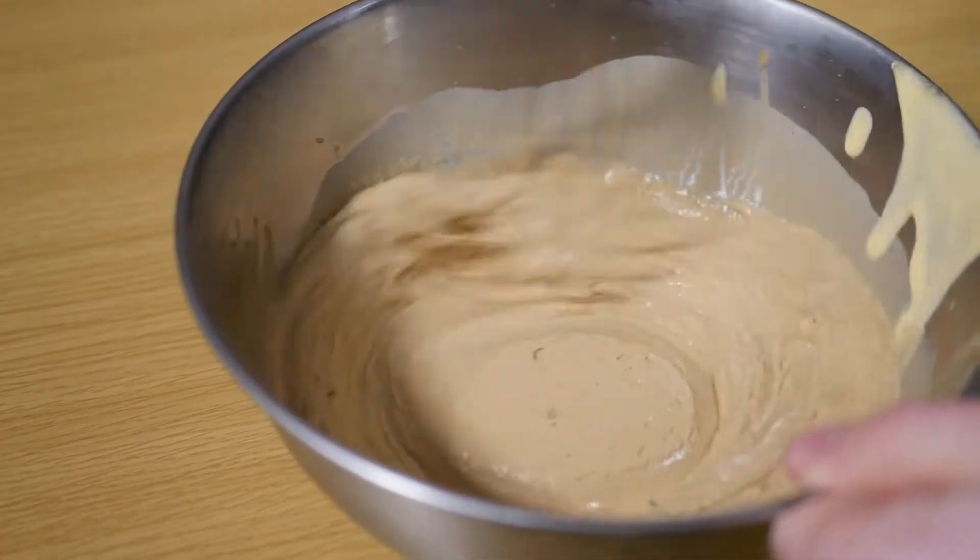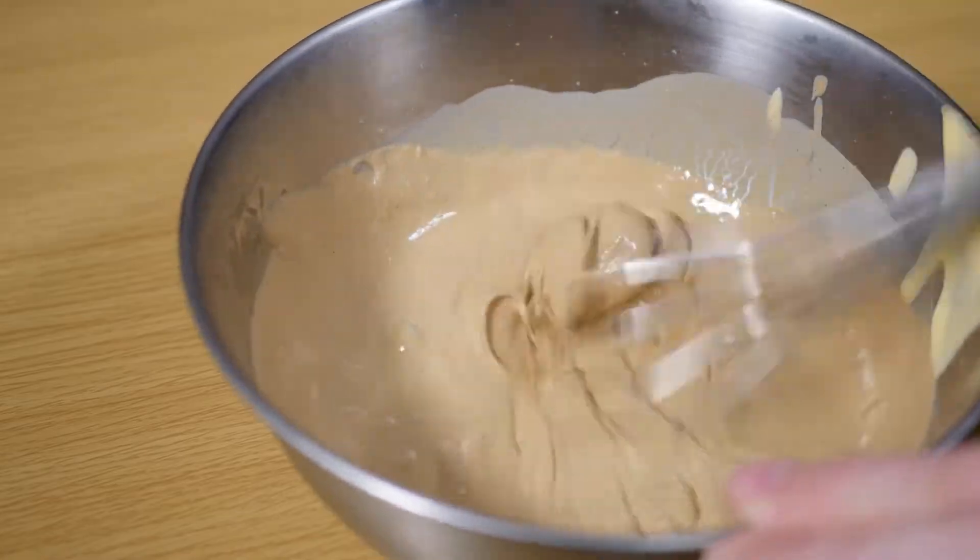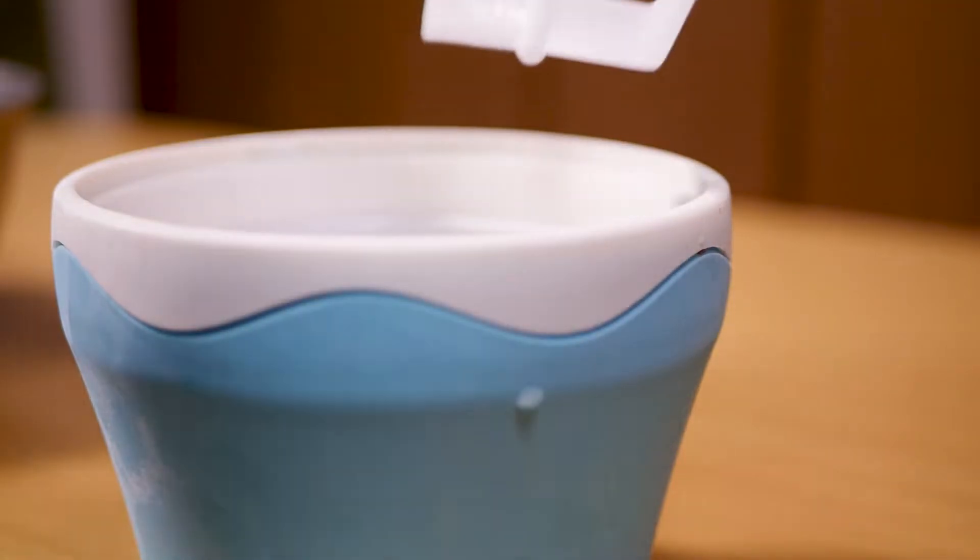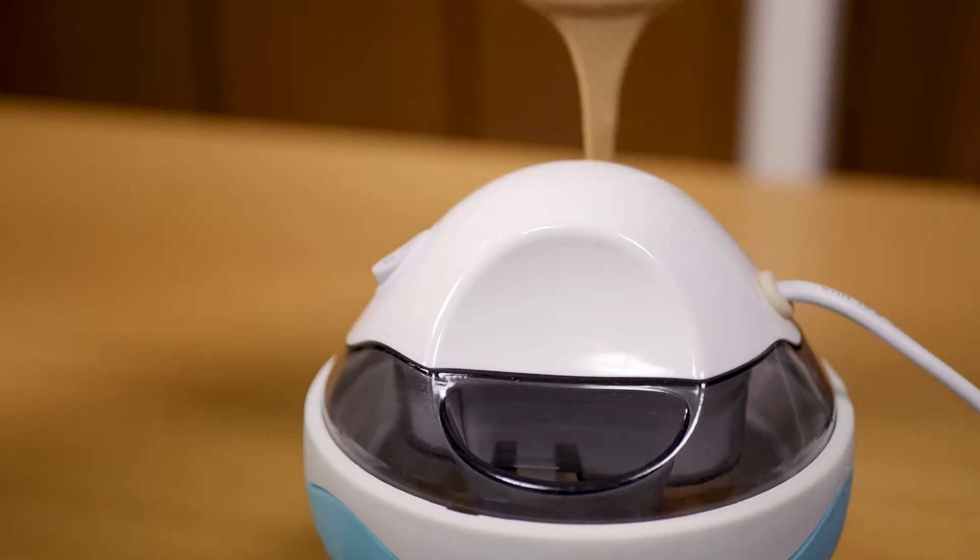Okay now the easy part. Follow the instructions on your ice cream maker. I'm taking this out of my freezer and setting it up immediately. Pour in as much mixture as your machine will allow and start churning.